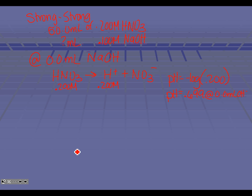So before we do anything, the pH of our strong acid in this particular case is 0.699. Now let's look at what happens when we start adding in our base — we start the titration. Let's look at 20 milliliters of 0.1 molar hydroxide. I'm setting this up so I can do my millimole calculation right here: 20 times 0.1 tells me I'm going to add in 2 millimoles of hydroxide.